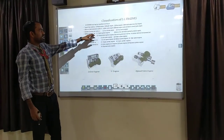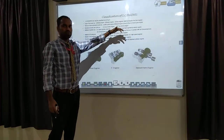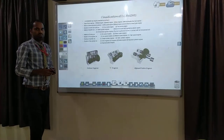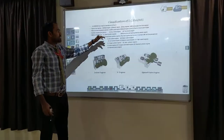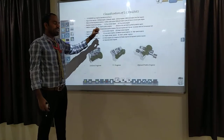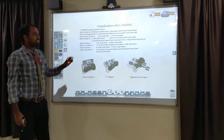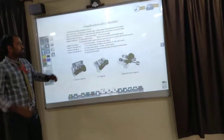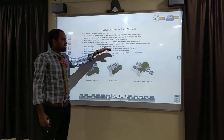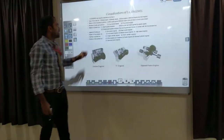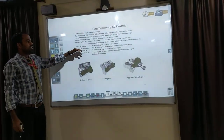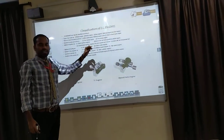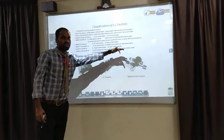Third point is the number of strokes per cycle: four-stroke engine and two-stroke engine. Fourth point is the method of ignition: first method is spark ignition engines, and next is compression ignition engines. Fifth point is method of cooling: air-cooled engines and water-cooled engines. Sixth point is speed of the engines: low speed, medium speed, and high speed engines.